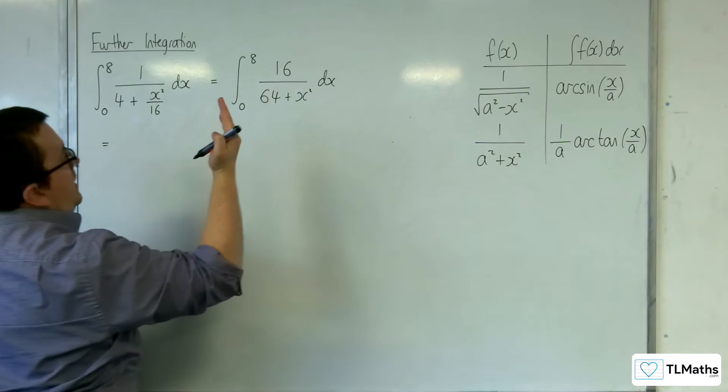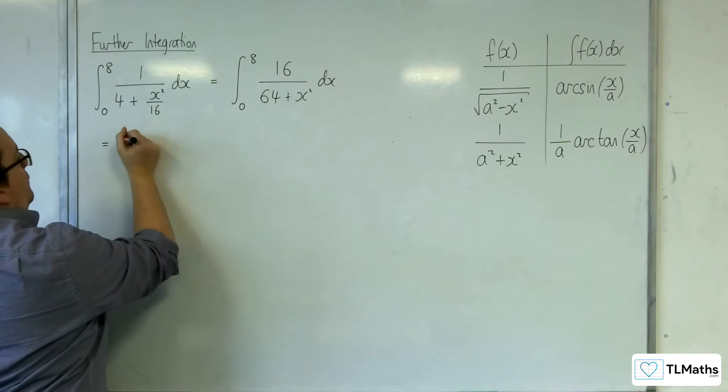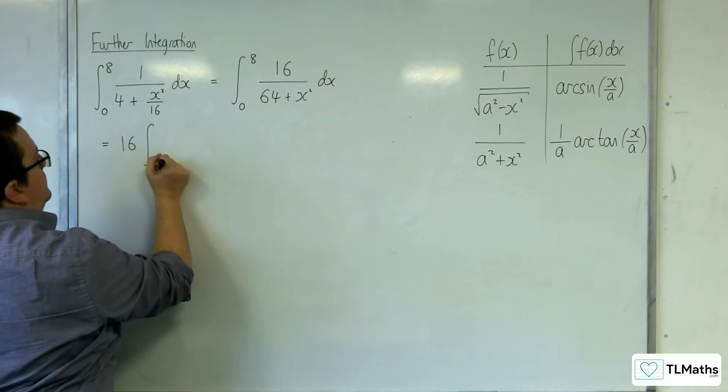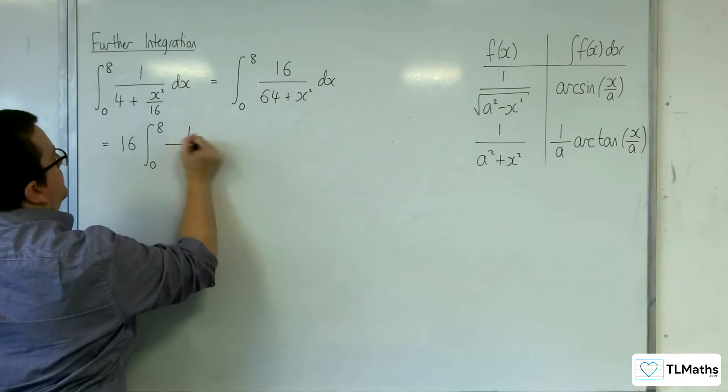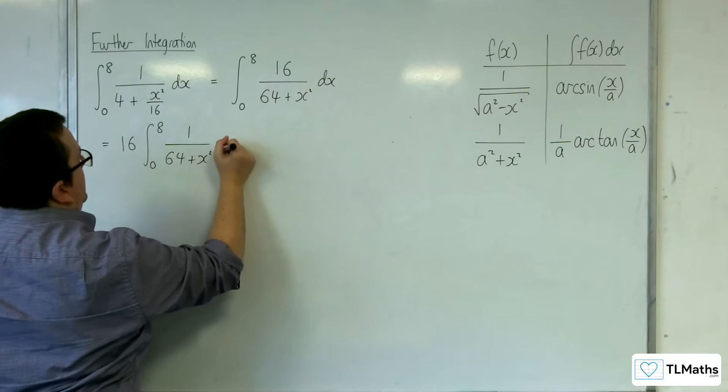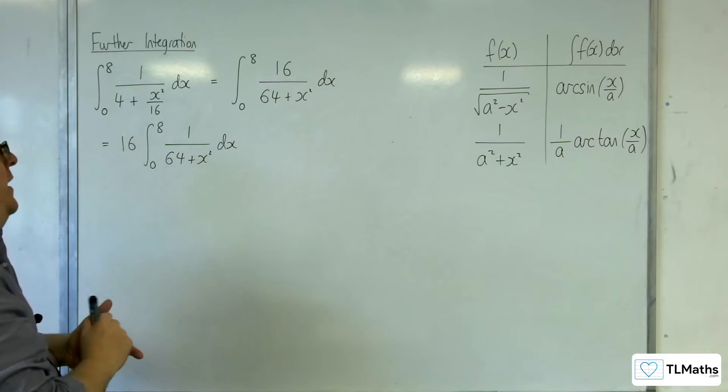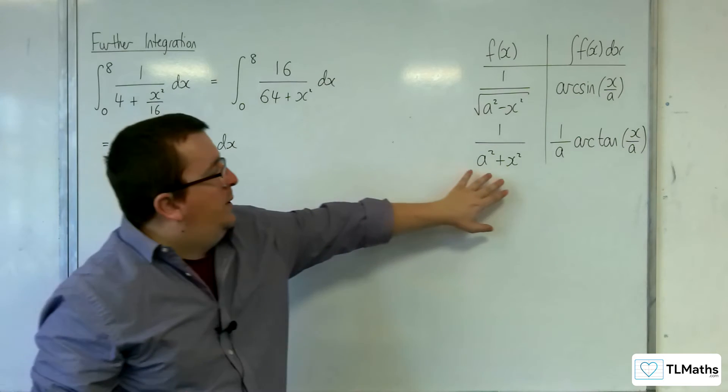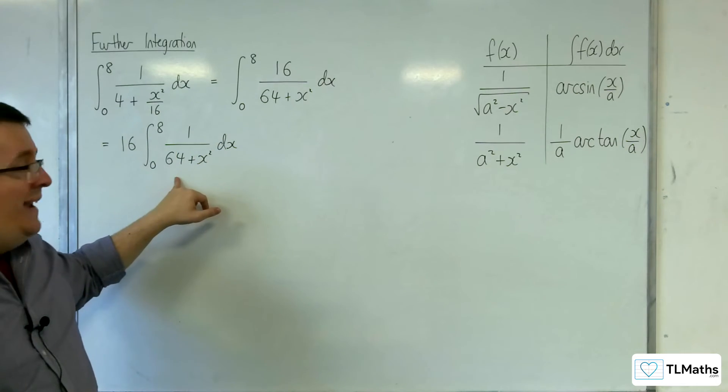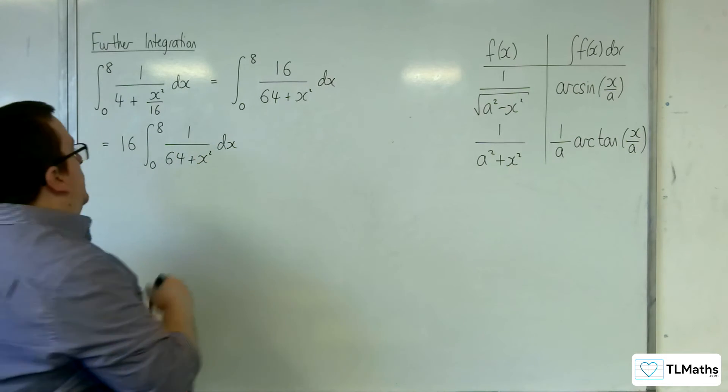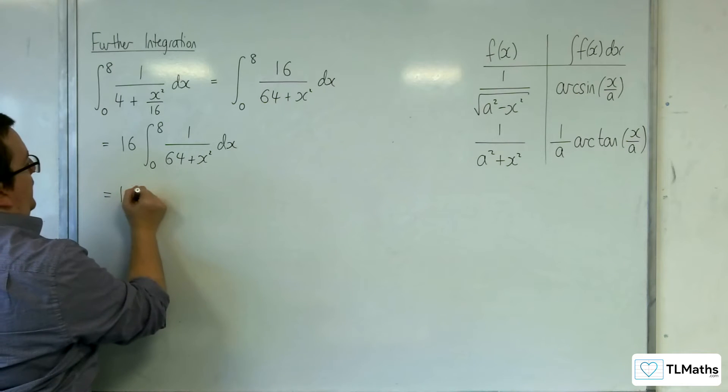So if I pull the 16 out of the integral, we can now see it's of the form that we have here where a is 8. So we know that we're going to have 16 times.